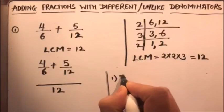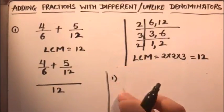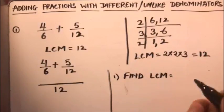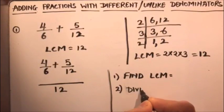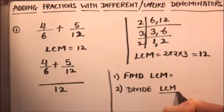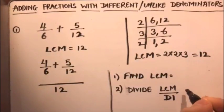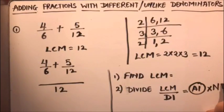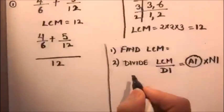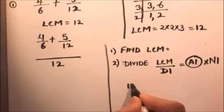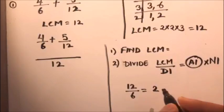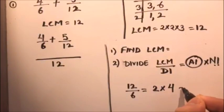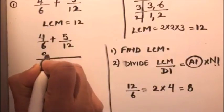Let me write the steps. Step one: find the LCM, which is the common denominator. Step two: divide the LCM by the first denominator. Whatever number we get, we multiply it by the numerator of the first fraction. Here, twelve divided by six gives two, and two multiplied by the numerator four gives eight. So we write eight here.